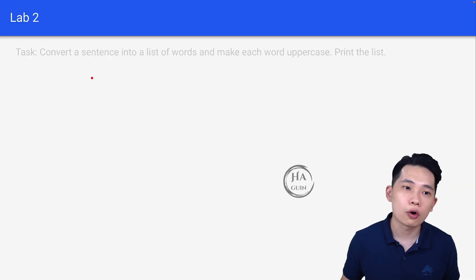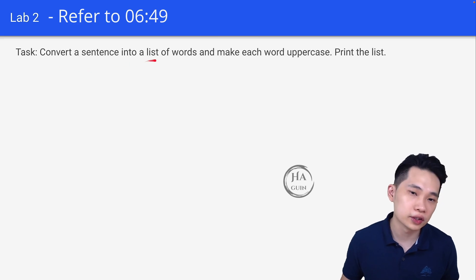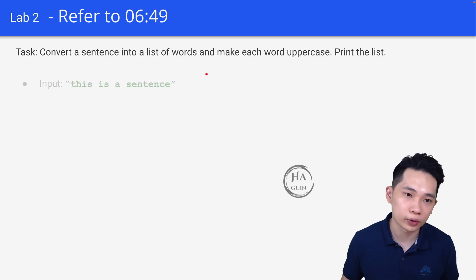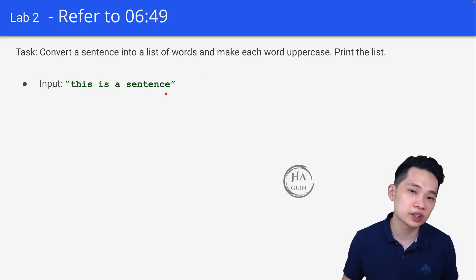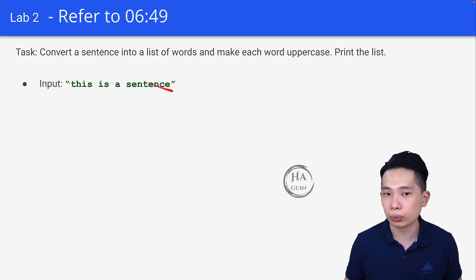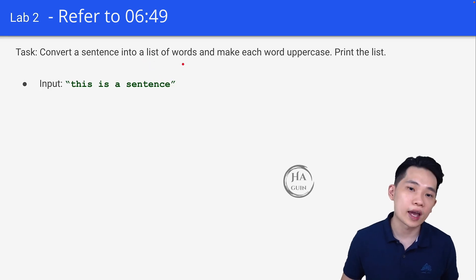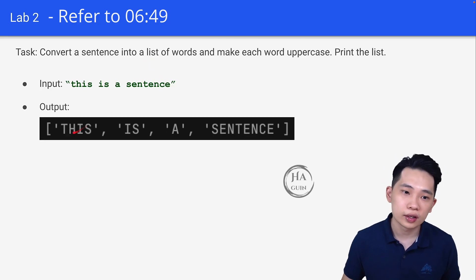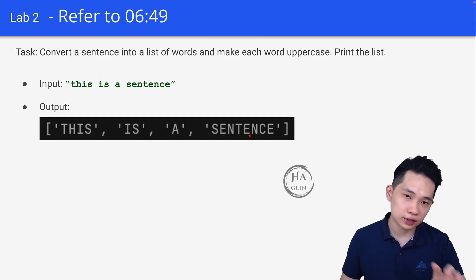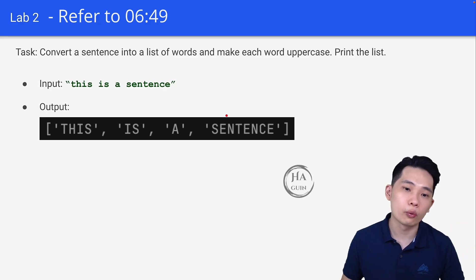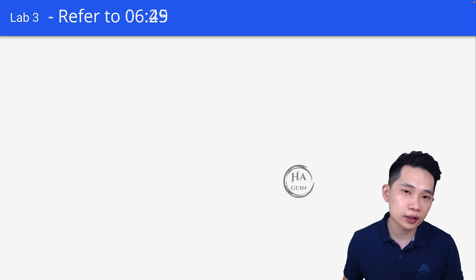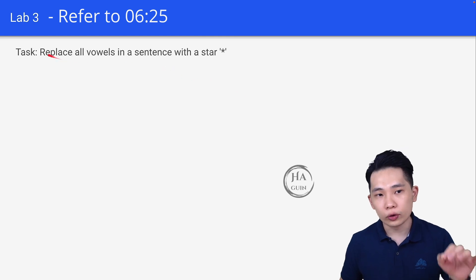For Lab 2, convert a sentence into a list of words and make each word uppercase, then print the list. For example, the input is a sentence like "this is a sentence" and the output should be ['THIS', 'IS', 'A', 'SENTENCE']. First break the string into a list, then convert every word to uppercase.